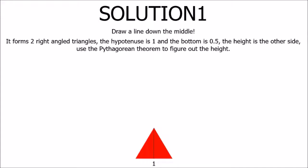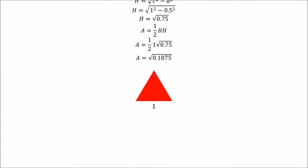Use the Pythagorean theorem to figure out the height. And then we have our final answer of the square root of 0.1875 times side squared.